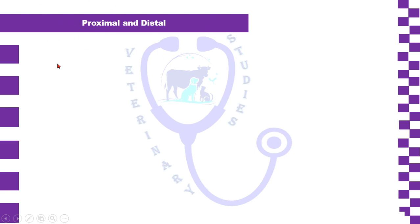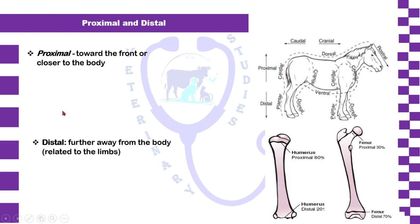Proximal and distal — both terms are related to the limbs of an animal. Proximal means the structure which is present near or toward the body of an animal, whereas distal is opposite to proximal, meaning away from the body. In long bones such as the humerus and femur, there are two extremities: the proximal extremity, which has a head facing toward the body, and the distal extremity, which faces away from the body.